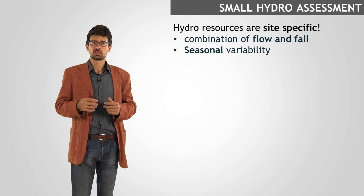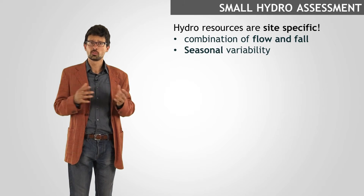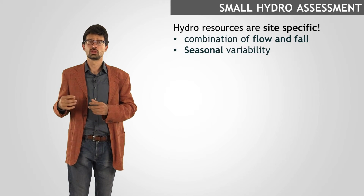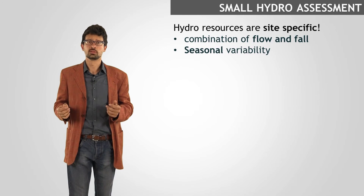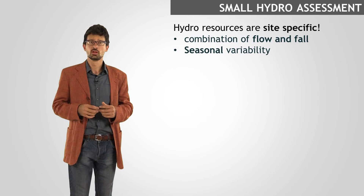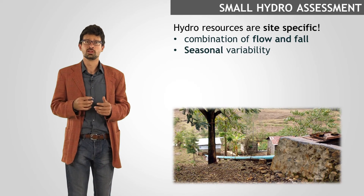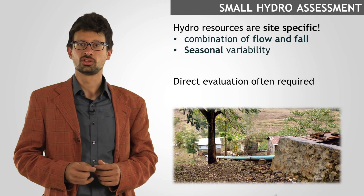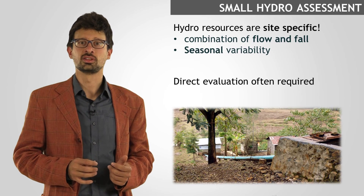Finally, hydro is another resource strictly site-specific. The potential in this case is given by the combination of two elements, that are the flow rate and the height of an eventual waterfall. Also in this case, the resource is affected by seasonal variability, which often requires a direct and case-by-case evaluation. On the other hand, small hydro plants, such as the one you can see in the figure, can provide affordable and reliable power supply. Therefore, this kind of energy source should always be considered when a stream or a river are present in the surrounding area.